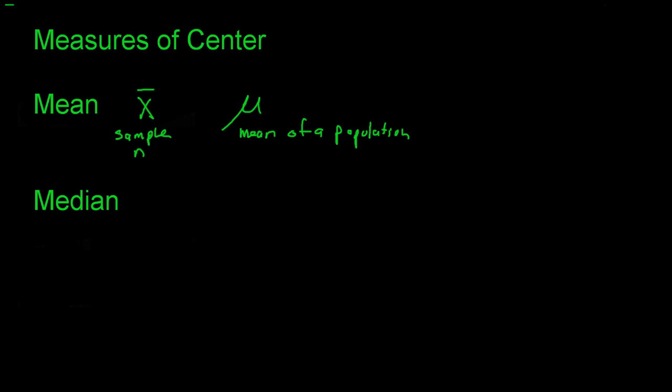The median is used only for a sample of data, and we usually denote it with a capital M, or sometimes just the word median. The formula for the mean on your formula sheet is the sum of all individual X values divided by how many total values you have.